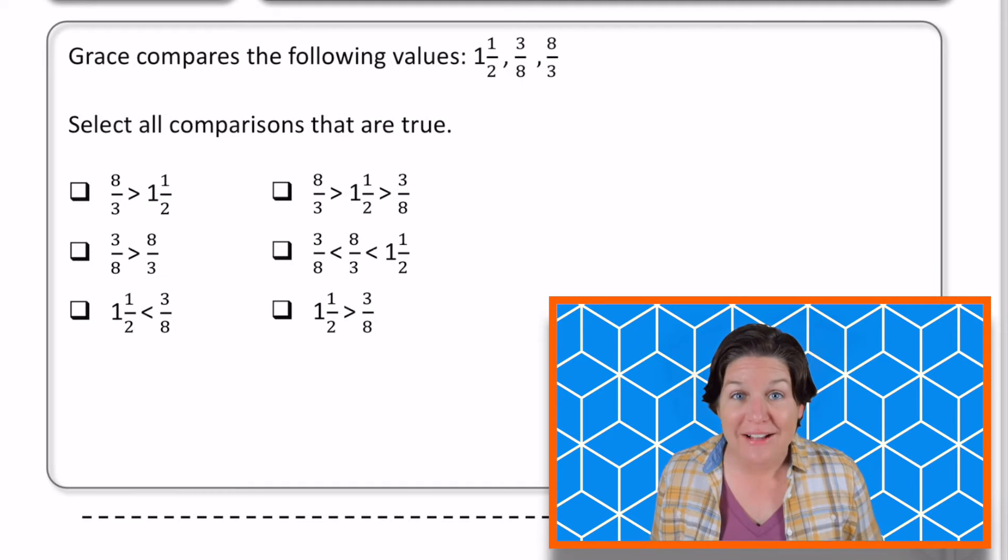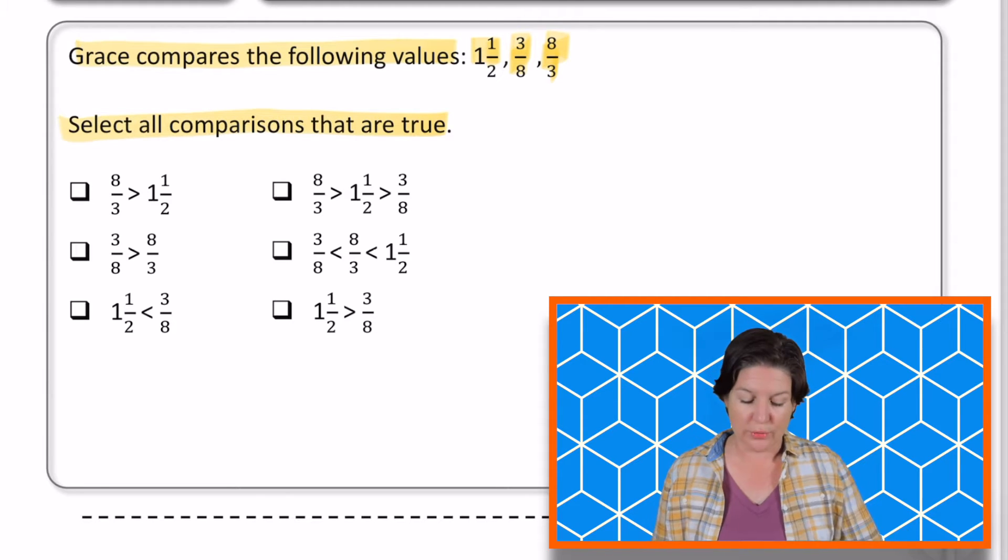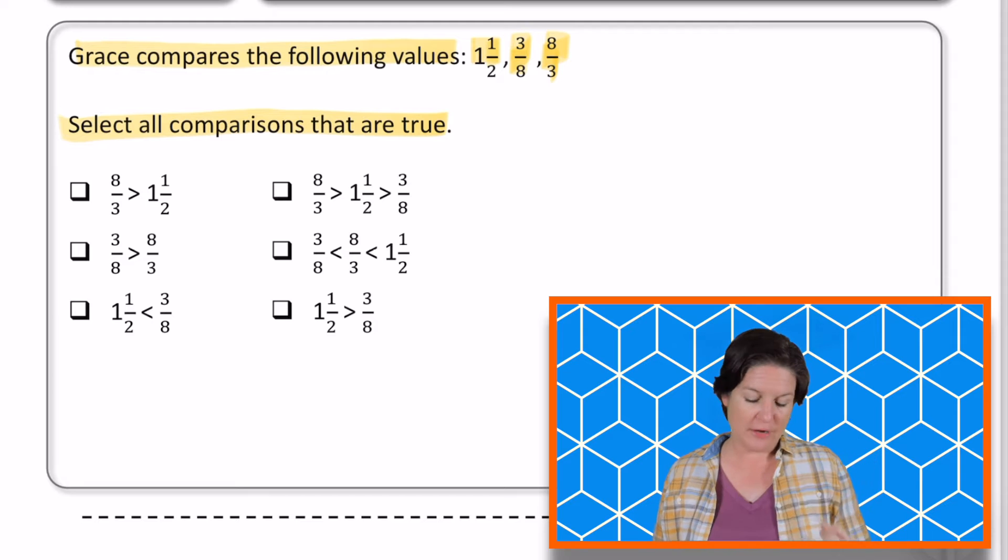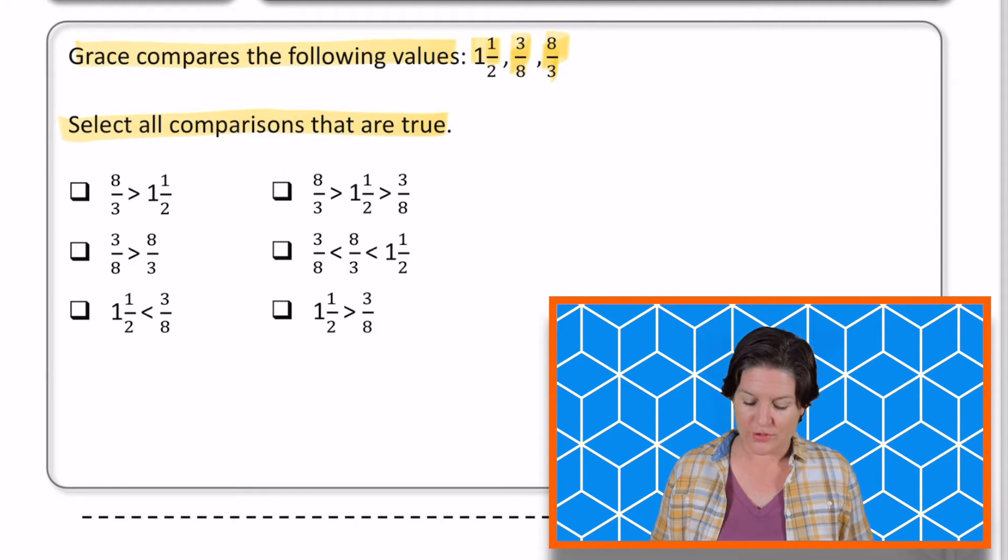All right, welcome back fourth grade. Here we go. So this one says Grace compares the following values: one and a half, three eighths, and eight thirds. Select all comparisons that are true. So we have three different fractions: one and a half, that's a mixed number; three eighths, that's actually a fraction that's less than one; and eight thirds is a fraction greater than one. So I know a little bit about these fractions already.